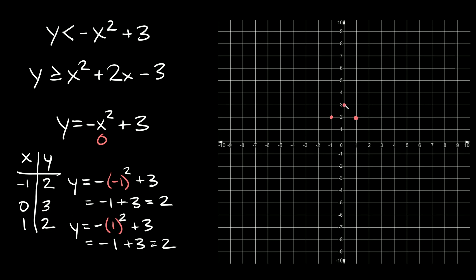It looks like our vertex is right here at zero, three, and then these are our two other points, so we can just go down like so to draw the parabola. Sorry, this should be a little more curvy.